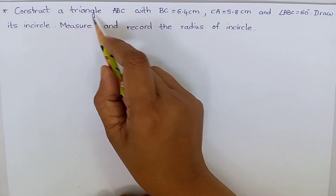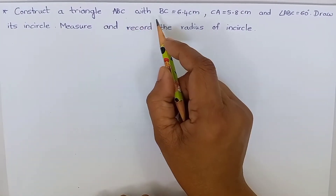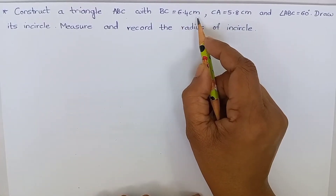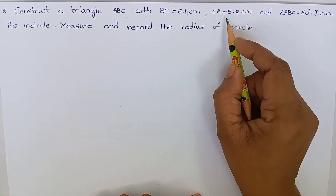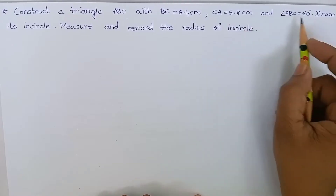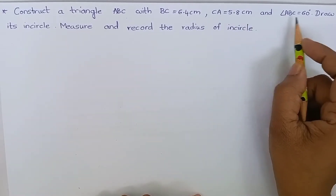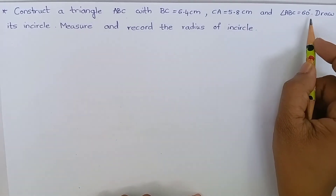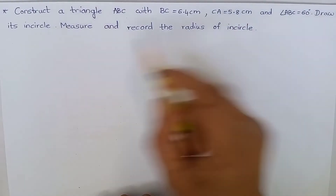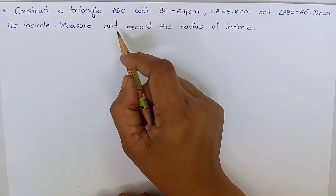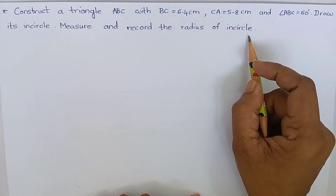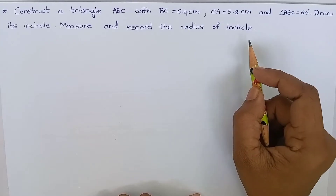Construct a triangle ABC with BC equal to 6.4 cm, CA equal to 5.8 cm, and angle ABC equal to 60 degrees. Draw its incircle and measure and record the radius of the incircle.